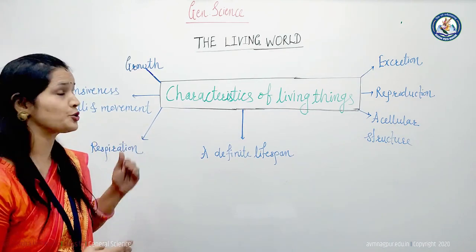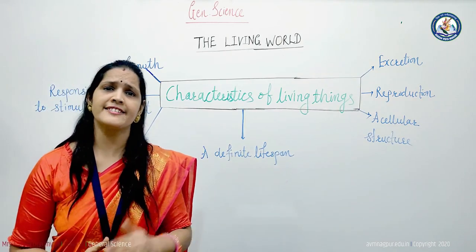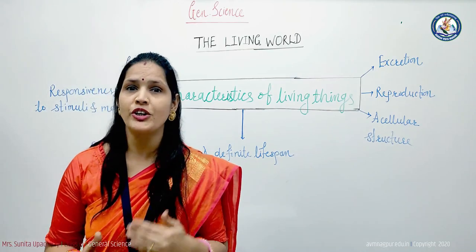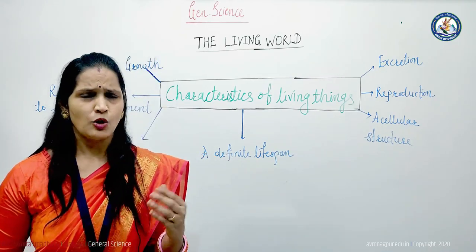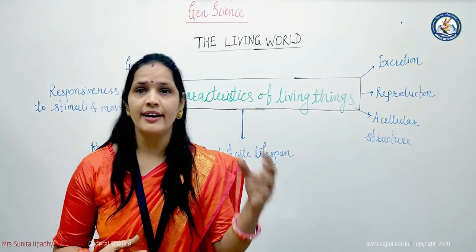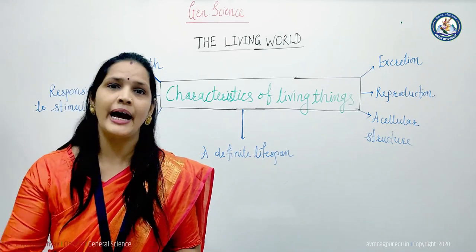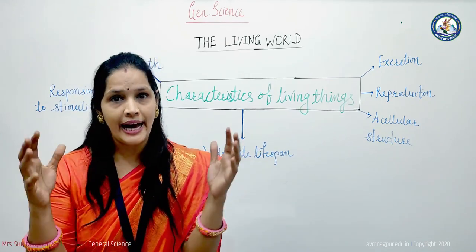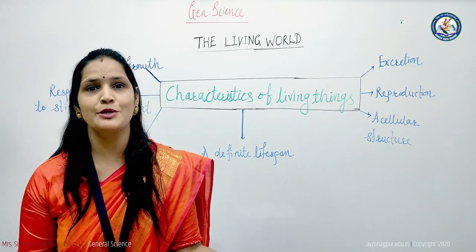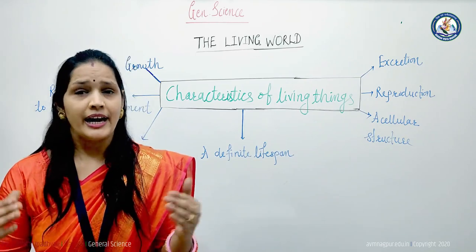The second characteristic of living organisms is responsiveness to stimuli and movement. All living things react in various ways in response to a stimulus. A stimulus is an event that occurs in our surroundings, and the ability of all living things to respond to a stimulus is called responsiveness to stimuli.